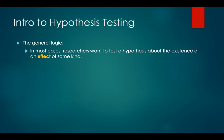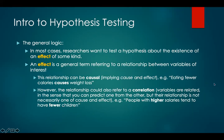Here's the general logic of hypothesis testing. In most cases, researchers want to test a hypothesis about the existence of an effect. When I say effect, I mean a general term referring to a relationship between variables of interest. This relationship can be causal, implying cause and effect — for example, eating fewer calories causes weight loss. But this relationship could also refer to a correlation, where variables are related in the sense that you can predict one from knowing the other, but the relationship is not necessarily one of cause and effect — for example, people with higher salaries tend to have fewer children.